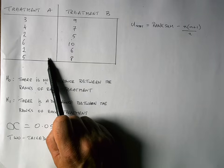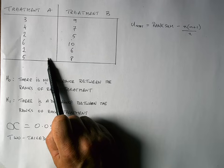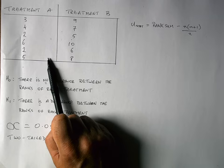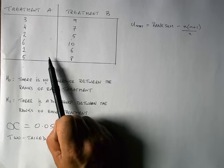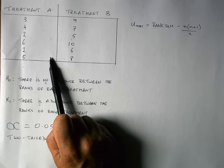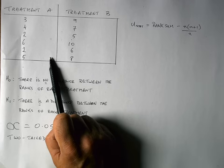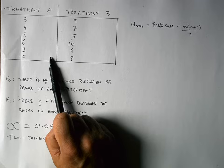Normally we might use a Student t-test to compare two groups for significant differences, but we cannot use a Student t-test if the data are not normal, as is the case here, or if our sample sizes are too small. So a Mann-Whitney test based on ranks is more appropriate with these data.